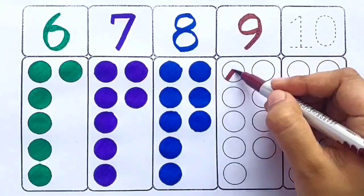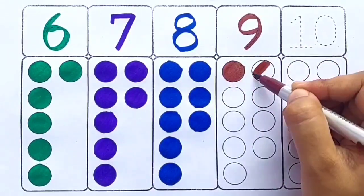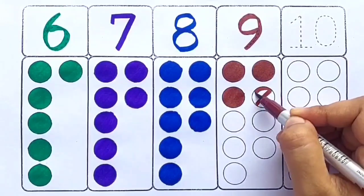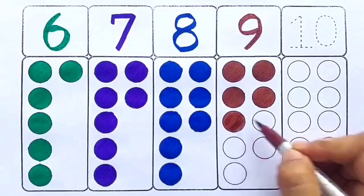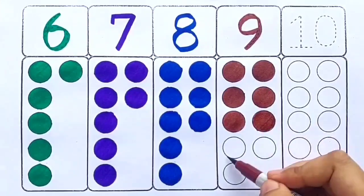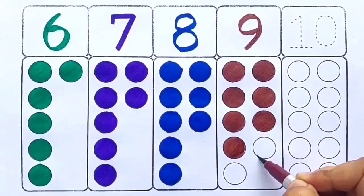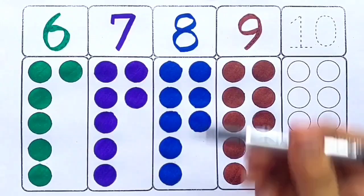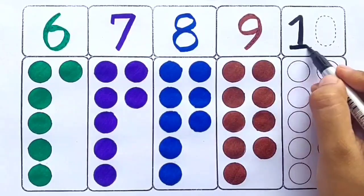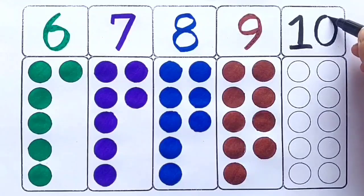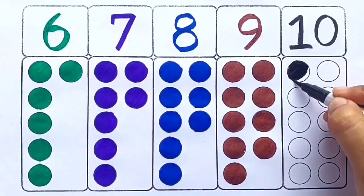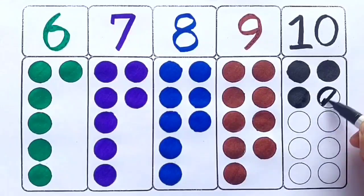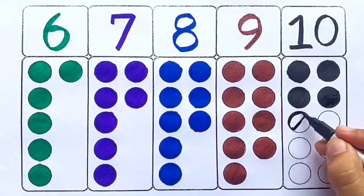One two three four five six seven eight nine, nine balls. Black color ten, one two three four five six seven eight nine ten, ten balls.